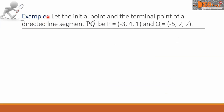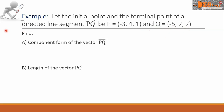Let us see this example. Let the initial point and the terminal point of a directed line segment — vector PQ — be P equals (negative 3, 4, 1) and Q equals (negative 5, 2, 2). Find: (A) the component form of vector PQ, and (B) the length of vector PQ.